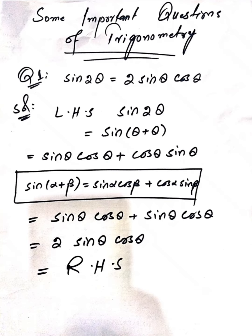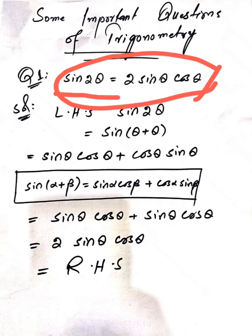The first question is that sin 2θ = 2 sin θ cos θ. We will show that sin 2θ is equal to 2 sin θ into cos θ. We take the left hand side of our required question, which is sin 2θ. We put 2θ as θ + θ and apply a formula.